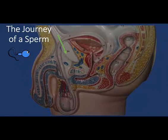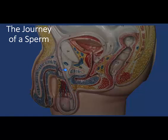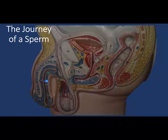Let's now look at the path of the sperm through the male anatomy. The sperm is produced in the testes. It will then travel into the epididymis. From the epididymis, it's going to travel through the vas deferens. It's then going to pass the glands, which are going to create seminal fluid, and the sperm is going to be expelled out of the body.